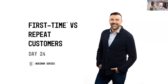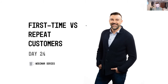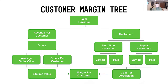Today is Day 24 of the profit challenge and we're going to get into what we call first-time versus repeat customers. I called this yesterday 'new versus returning' but 'first-time versus repeat customers' gives us a little more balance. To recap, we've got the customer margin tree — today we're getting into the right-hand side. Yesterday we looked at revenue per customer and lifetime value. Today we're talking about customers.